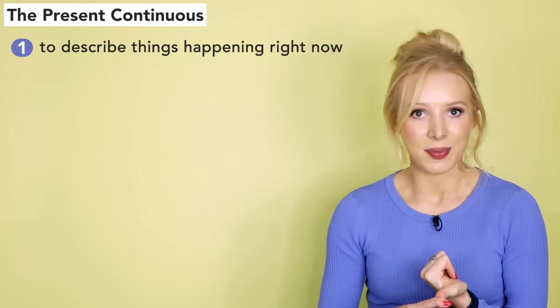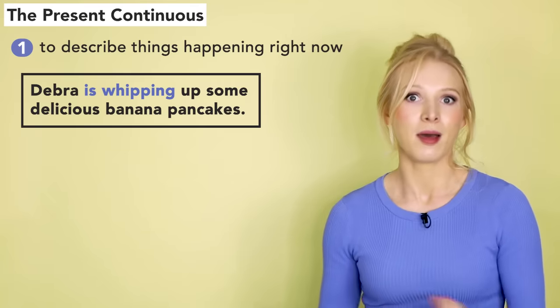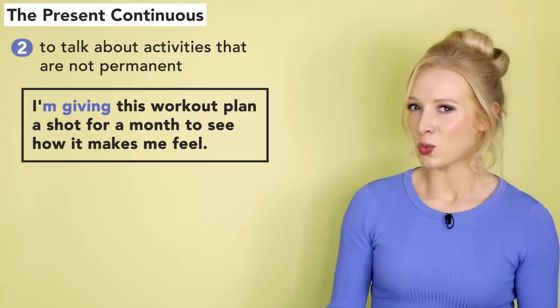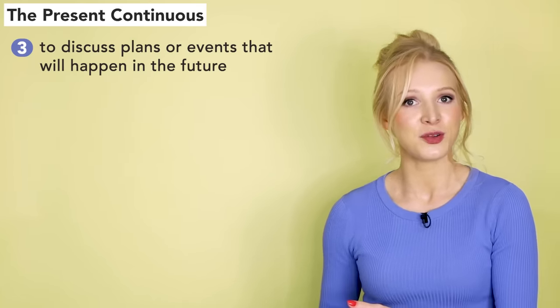Now let's move on to our last verb tense of the day so you can get out there and start showing off your grammar skills — the present continuous. We use it to describe things happening right now: 'Deborah is whipping up some delicious banana pancakes.' We use it to talk about activities that are not permanent: 'I'm giving this workout plan a shot for a month to see how it makes me feel.' We use it for discussing plans or events in the future: 'Mark isn't going to that conference next month — he changed his mind.' We use it for actions happening around a specific time: 'I'm working this morning, but I'll be free this afternoon.' And we use it for describing things that are gradually changing: 'The city is slowly becoming more eco-friendly with new recycling programmes and bike lanes.'